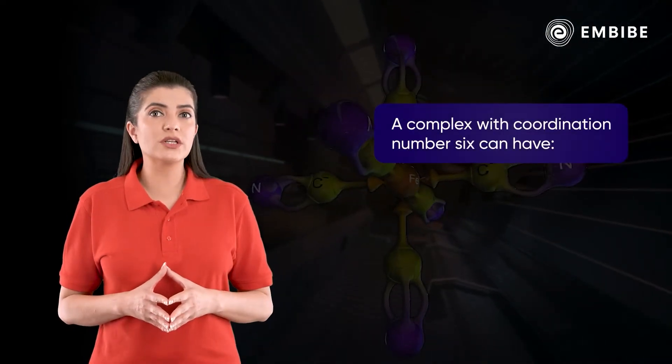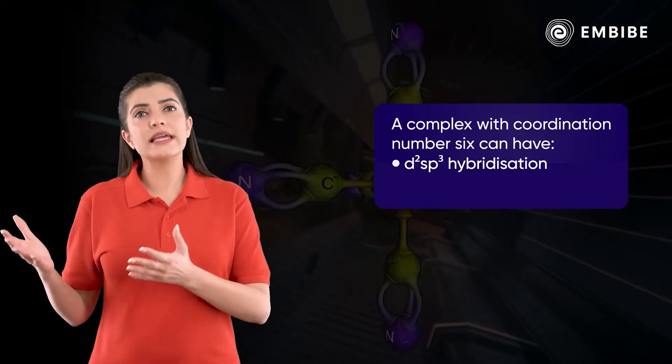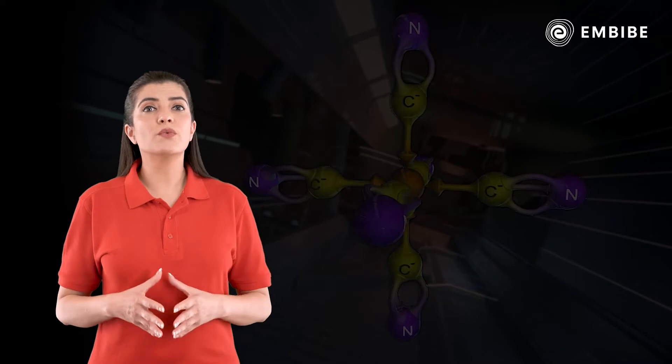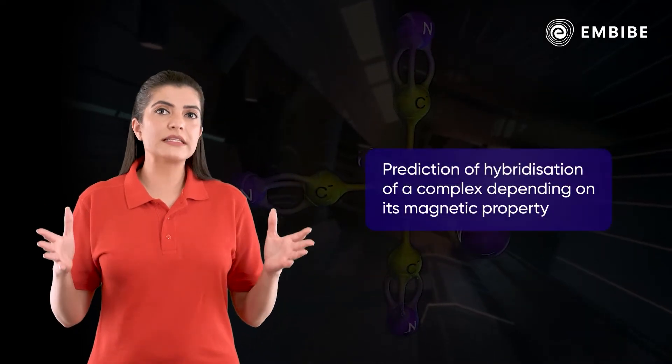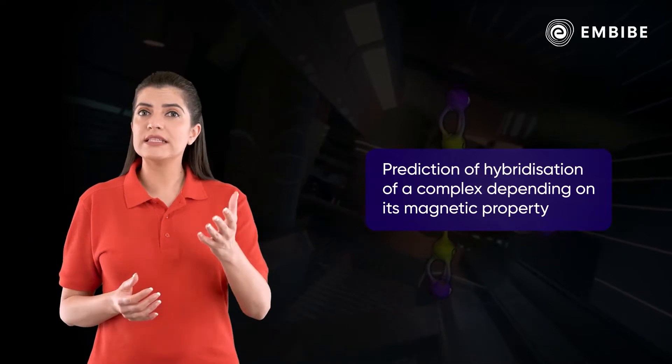We have studied that such a complex with coordination number six can have either d2sp3 or sp3d2 states of hybridization. In this topic, we will study how to predict the state of hybridization of a complex depending on its magnetic property.